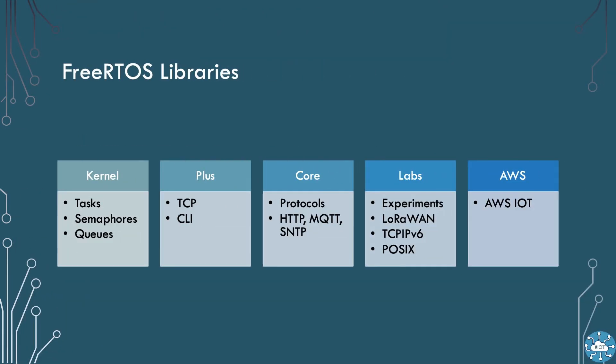FreeRTOS provides five sections of libraries. The kernel, which we are focused on here, gives us the ability to run tasks and to communicate between those tasks. FreeRTOS Plus provides open libraries to build TCP/IP stacks for microcontrollers and command line interfaces. FreeRTOS Core provides protocols such as HTTP for web servers and services.